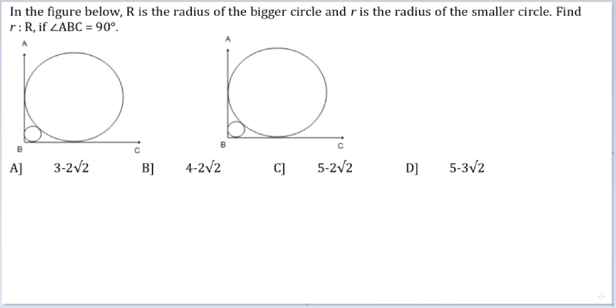Let's look at this question. In the figure below, R is the radius of the bigger circle and r is the radius of the smaller circle. Find the ratio of r to R if angle ABC is equal to 90 degrees.